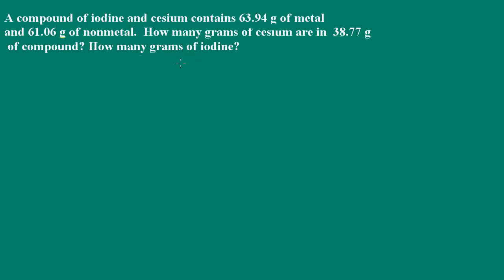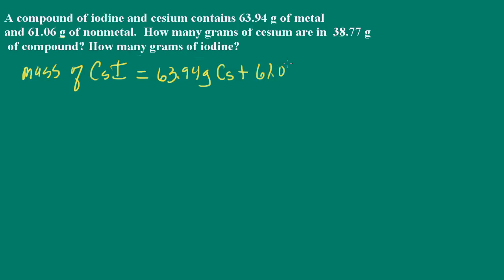In this next problem, we're told that a compound of iodine and cesium contains 63.94 grams of metal and 61.06 grams of non-metal. How many grams of cesium are in 38.77 grams of the compound, and how many grams of iodine are in this compound? First, we determine which is the metal and which is the non-metal. Cesium is the metal and iodine is the non-metal. The mass of cesium iodide equals the mass of cesium plus the mass of iodine, which is 125 grams of cesium iodide.